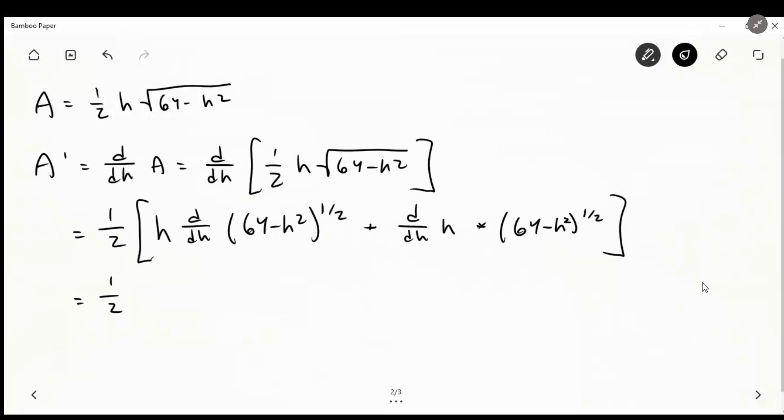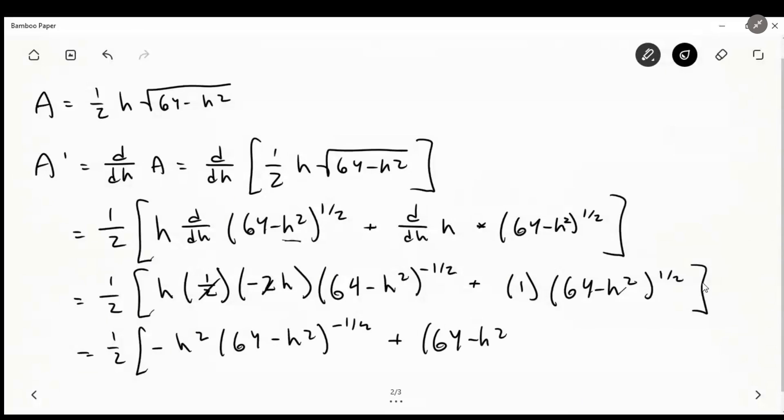So this is just one-half times h. And here, we can bring out the one-half, and then the inside term, we see that we have to take the derivative of this term too. So I skipped a little step in there, but if you need help with that clarification, just leave a comment. And we know the derivative of h is just one, we're multiplying that by 64 minus h squared to the one-half. Okay, so now we can write this as one-half of minus h squared, since these cancel there, and 64 minus h squared minus one-half plus 64 minus h squared to the one-half.